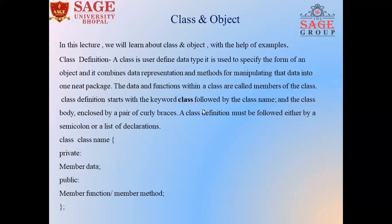In this lecture we will discuss the definition part with examples. A class is a user-defined data type. It is used to specify the form of an object and it combines data representation and methods for manipulating that data into one neat package. The data and functions within a class are called members of the class. Class definitions start with the keyword class, followed by the class name, and the class body is enclosed by a pair of curly braces. A class definition must be followed either by a semicolon or a list of declarations.